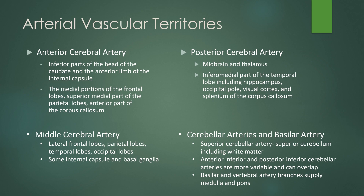The middle cerebral artery covers the lateral frontal lobes, parietal lobes, temporal lobes, and occipital lobes, as well as some internal capsule and basal ganglia. The posterior cerebral artery covers the midbrain and thalamus, as well as the inferomedial temporal lobe including the hippocampus, occipital pole, visual cortex, and splenium of the corpus callosum. The superior cerebellar artery supplies the superior cerebellum including the white matter. The anterior inferior and posterior inferior cerebellar arteries are more variable and can overlap. The basilar and vertebral artery branches supply the medulla and pons.